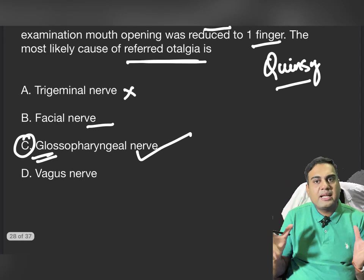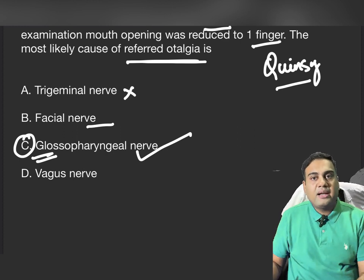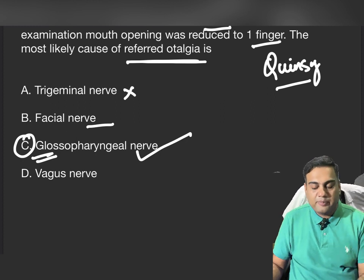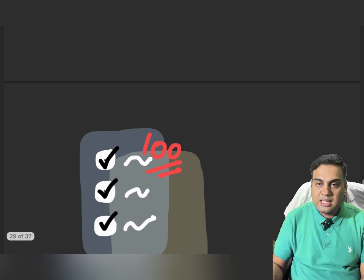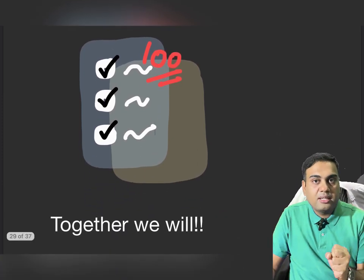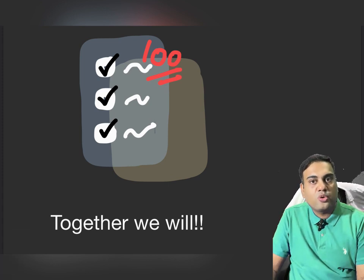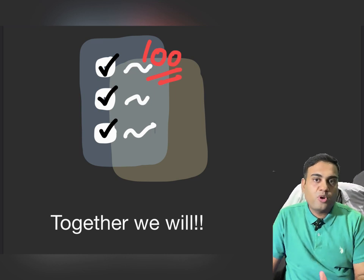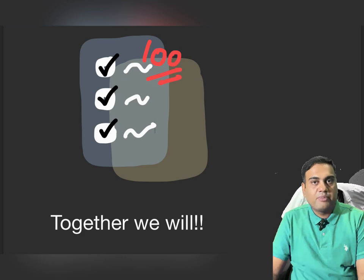Through these ten questions, we have quickly summarized all parts of the pharynx — the anatomy, diseases, applied anatomy, and how to tackle picture-based questions. After every topic, we will discuss and solve questions together. I am not evaluating you — I am with you till the end. We will solve the next set of questions together.